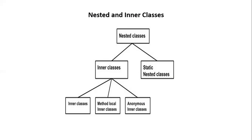There are four types of inner classes in Java: nested inner class, method local inner class, anonymous inner class, and static nested classes. A nested inner class can access any private instance variable of the outer class. Like any other instance variable, we can have access modifiers — private, protected, public, and default.